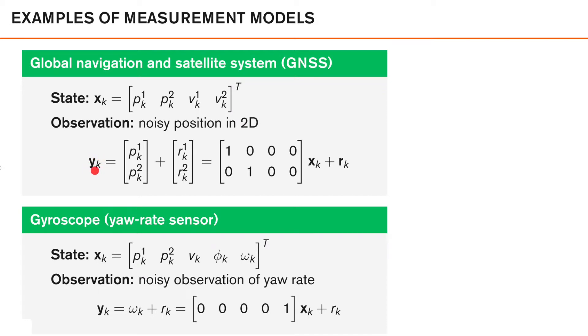So the measurement model can then look like this. So our measurement YK would be noisy observations of the 2D position. Measurement one could be P1K plus some noise, and measurement two could be P2K plus some noise. I would like you to observe that this is a linear function of XK because we can write this as a matrix times XK plus noise. The matrix here is our measurement model matrix, which we usually call capital HK.